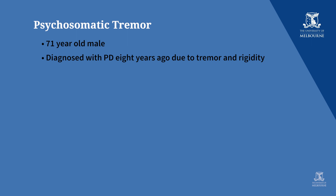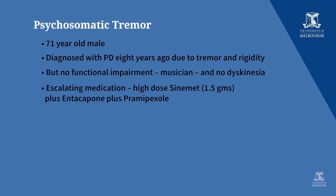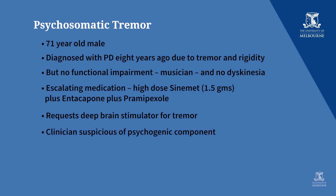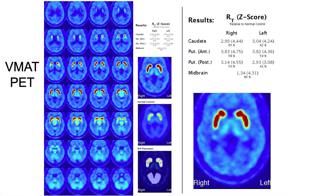The final case is a 71-year-old male diagnosed with Parkinson's disease eight years earlier due to tremor but with no functional decline — he was still a professional musician. He had requested and received escalating doses of medication and came requesting deep brain stimulator treatment for his tremor, though the clinician was becoming suspicious of a psychogenic component. His VMAT scan compared to normal showed increased tracer binding, not reduced tracer binding. This confirmed a diagnosis of psychosomatic tremor, and the patient's anti-Parkinsonian medications were withdrawn and he was referred for psychiatric and psychological counselling.